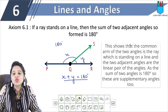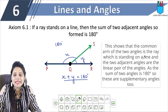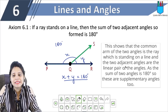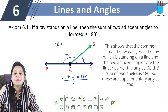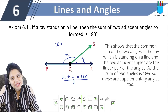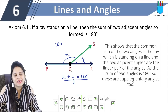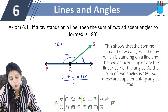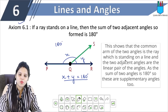Let's read it again. This shows that the common arm of the two angles is the ray which is standing on a line, and the two adjacent angles are the linear pair of angles. As I have told you, since the sum of the two angles is 180 degrees, these are supplementary angles. This is our Axiom 6.1.